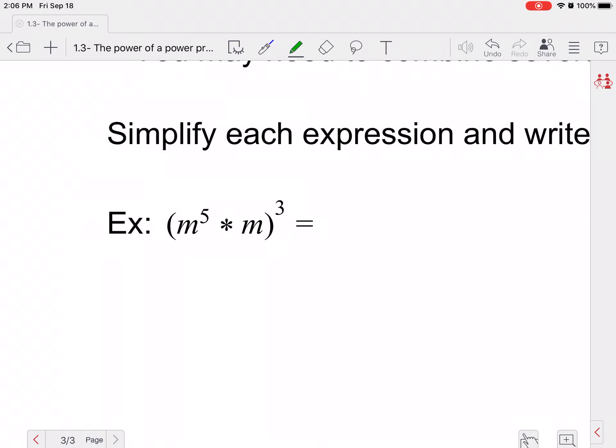So if I saw m to the fifth times m all to the cube, I'm going to combine like terms on the inside because it's the product property. So remember this is an invisible one here. So m to the fifth times m to the one, that would be m to the sixth because I'm adding my exponents to the third. m to the sixth to the third, I multiply using the power rule. So six times three is 18. So that simplifies m to the 18th.